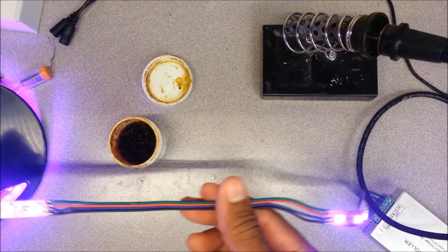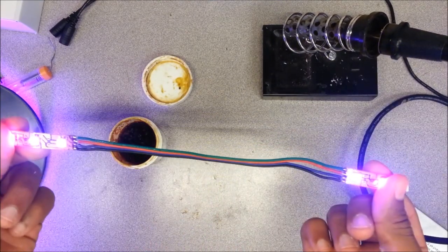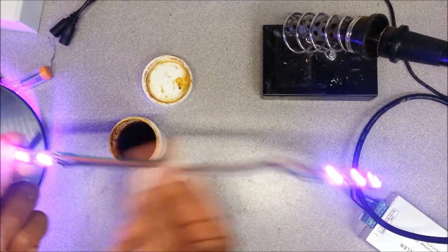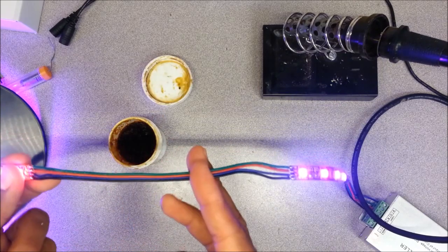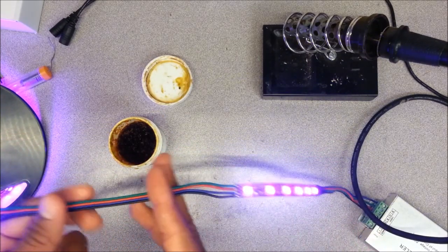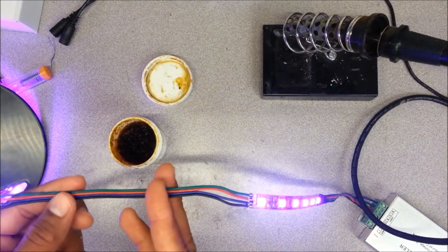And that's how you solder two pieces of RGB strip together. Your wire, of course, can be any length that you required it to be for any application that you have.